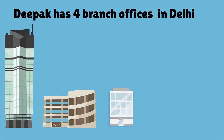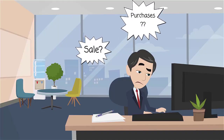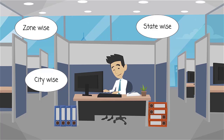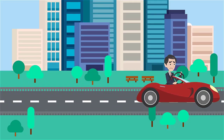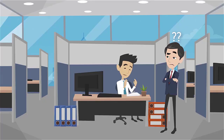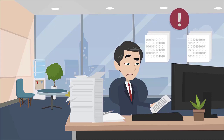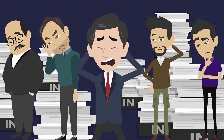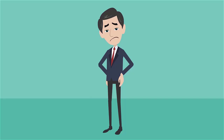Let's meet Deepak, who has four branch offices in Delhi. He is worried because of sale, purchase, and inventory reports across different branches. His manager has to spend most of the time synchronizing and consolidating data from different branches. To view zone-wise, city-wise, and state-wise purchase or sales reports, Deepak has to visit different branches repeatedly, which is very time-consuming and hectic. These reports are also manual, leading to data mismatches, making it impossible to recognize the status of purchase, sale, and inventory of each branch and make proper strategic decisions.